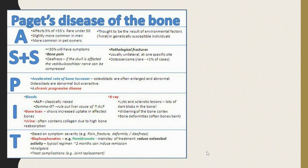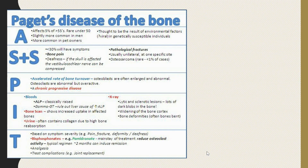In summary, Paget's disease usually occurs in middle-aged individuals. Signs and symptoms include bone pain and deafness if the skull is affected and the vestibulocochlear nerve is compressed. It is a chronic progressive disease. Investigations show increased levels of alkaline phosphatase, and urine often contains collagen due to high bone resorption. X-ray shows bone deformities. Treatment includes bisphosphonates like pamidronate and analgesics.